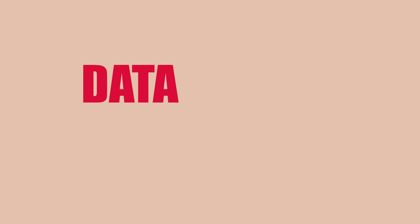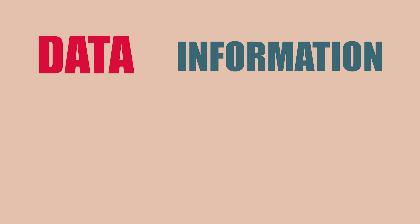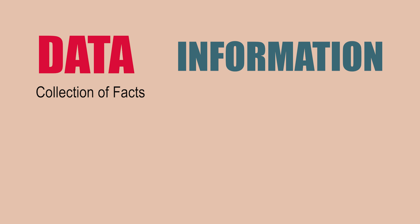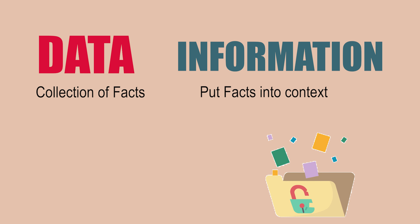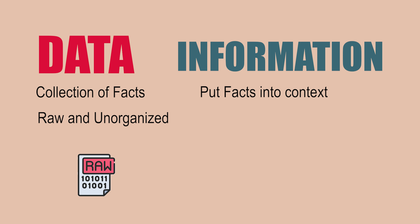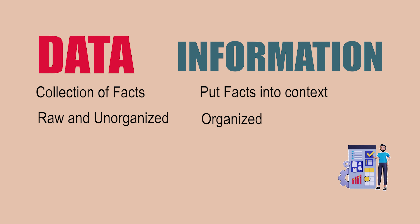What is data and information? The key differences between data versus information. Data is a collection of facts, while information puts those facts into context. While data is raw and unorganized, information is organized.